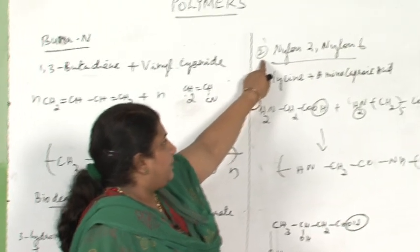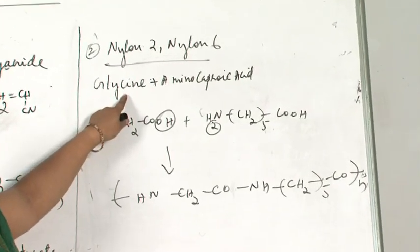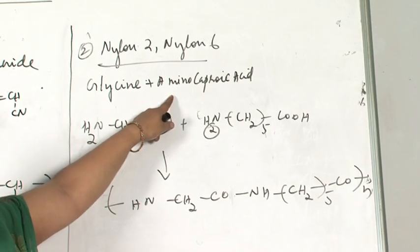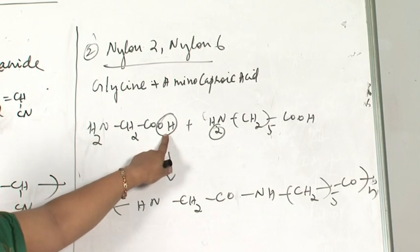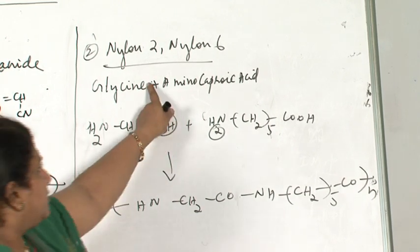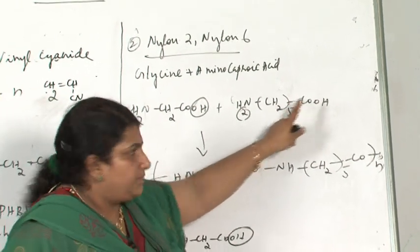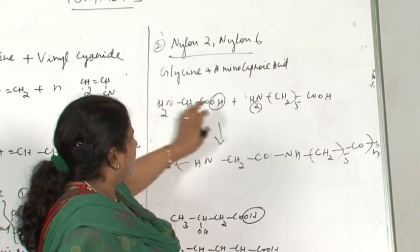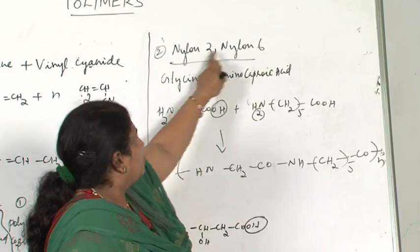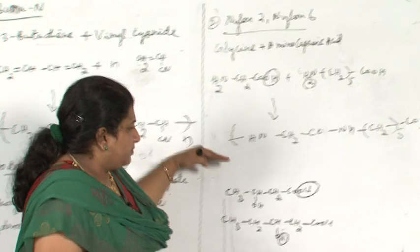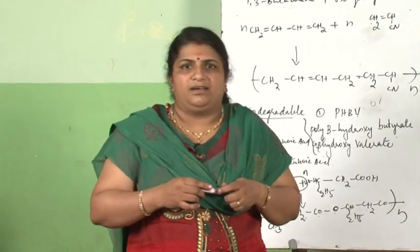The next biodegradable polymer is nylon 2–nylon 6. Its monomers are glycine (NH2-CH2-COOH) and aminocaproic acid (NH2-(CH2)5-COOH). These two combine by condensation — OH and H are replaced — giving the polymer nylon 2–nylon 6. With this, all the polymers and their monomers are finished.